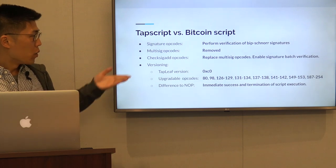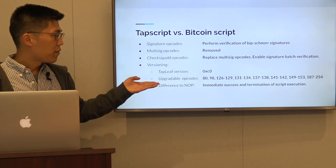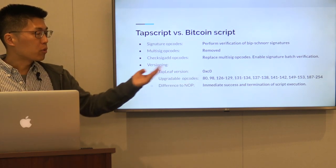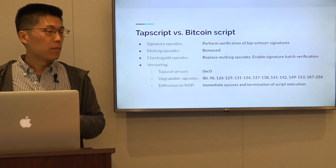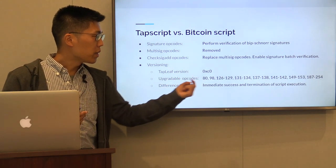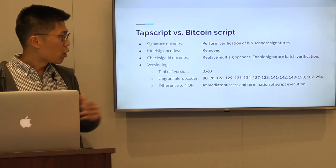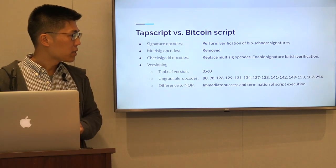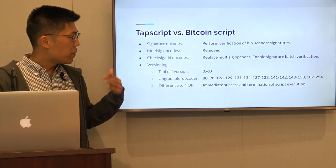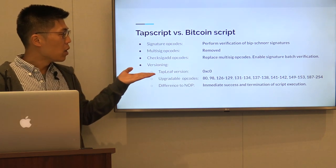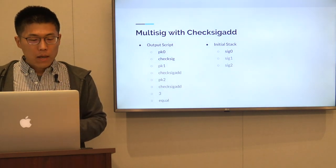We also have many versioning options. The tap leaf, or tapscript, can be versioned. We now have upgradeable opcodes reserved for future functionality — these are success opcodes, meaning that if they are seen during script evaluation they automatically terminate the script with success. This contrasts with NOP codes in the past, which were simply ignored during script execution. So we have the ability to upgrade or version tapscript at both the tap leaf level and the opcode level.